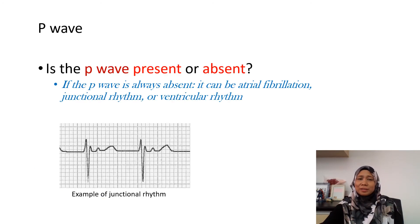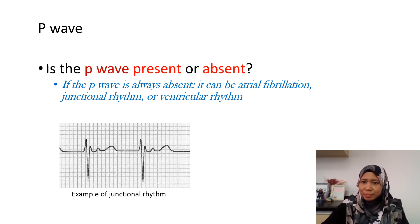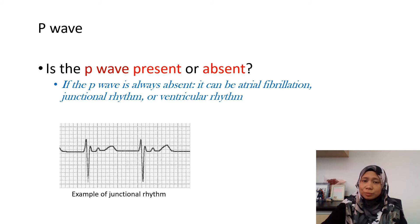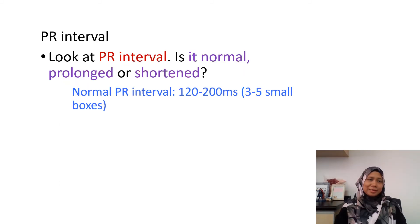Now we look at the P wave — is it absent or present? If the P wave is always absent but the rhythm is narrow complex, then it could be atrial fibrillation or junctional rhythm. If the rhythm is broad, it can be because of ventricular rhythm.